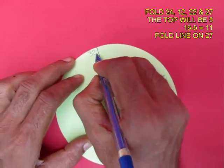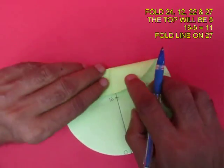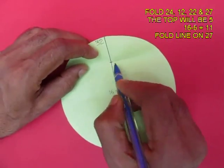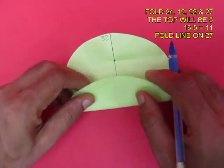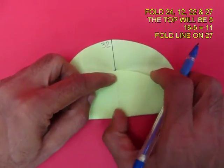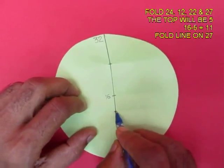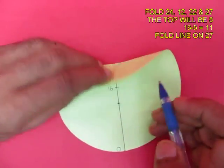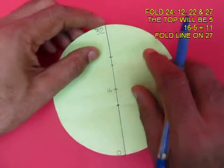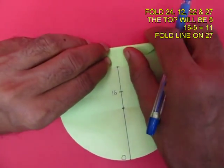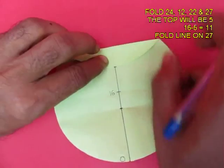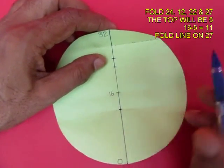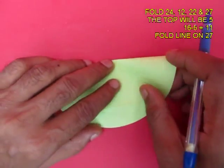Now fold the top tip to the center to locate 24. Fold bottom to 24 to locate 12. Now fold the top to this to locate 27 and finally bisect this and this line would be 11 from the center.